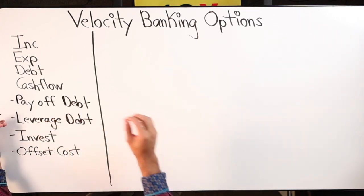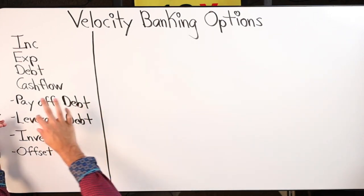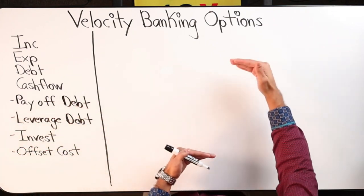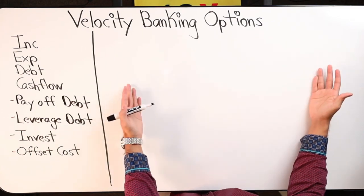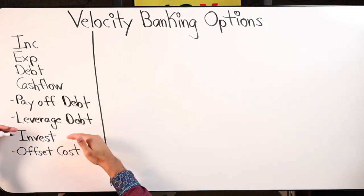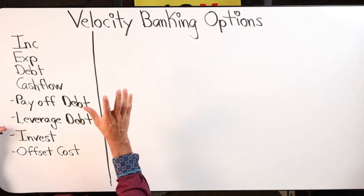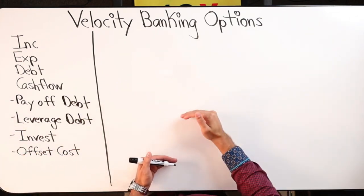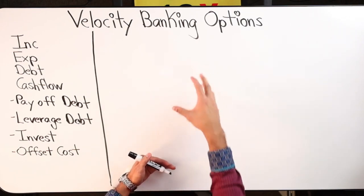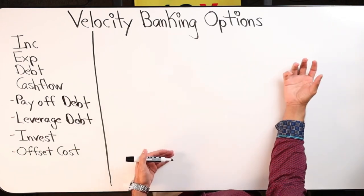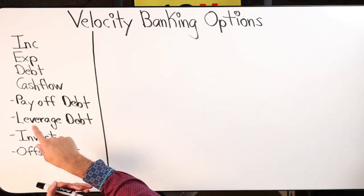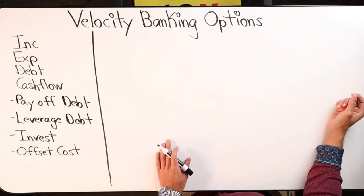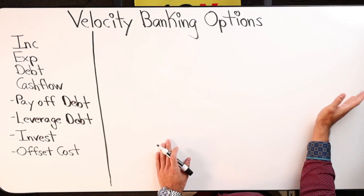Leverage can be a scary word — it involves risk. You can lose money, you can make money. Paying off debt provides a guarantee: if I pay it off, I never have to worry about it again. If I leverage debt, I'm not trying to pay it off fast — I'm trying to turn that debt into an income-producing asset. Typically that's real estate.